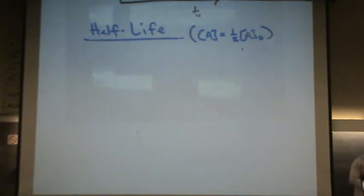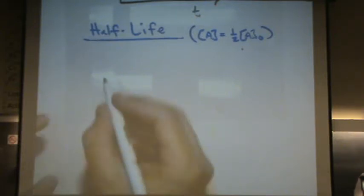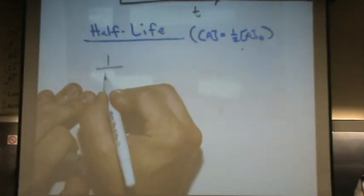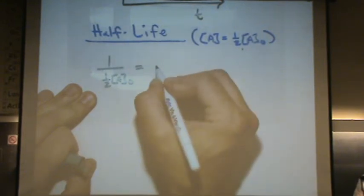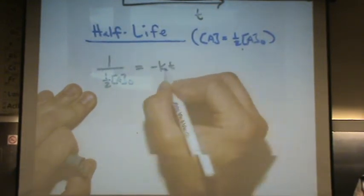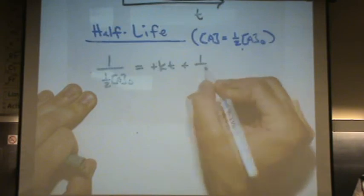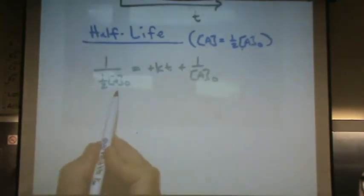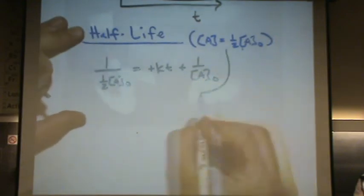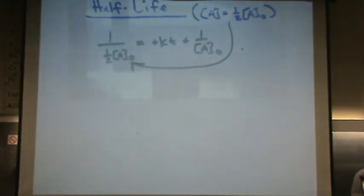So, that's basically the definition of half-life when your concentration is half the initial. So, what I'm going to do is use the integrated rate law and sub in. Instead of 1 over A, I'll put 1 over half A-naught equals kt plus 1 over A-naught. So here I just substituted in this equation right there, the integrated rate law.